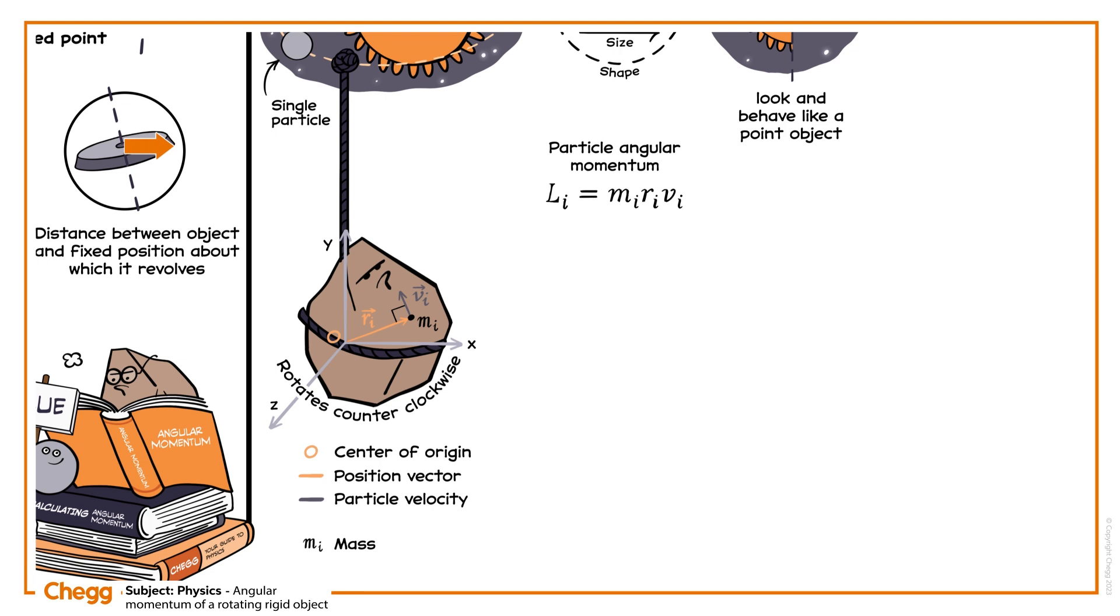Say the rock is spinning with an angular speed omega. To calculate the velocity of the particle, we use the following equation. Velocity is the cross product of the position vector and the angular speed. But of course, an entire rigid object is made up of many single particles, not just one. So how do we calculate the angular momentum of an entire rigid object?